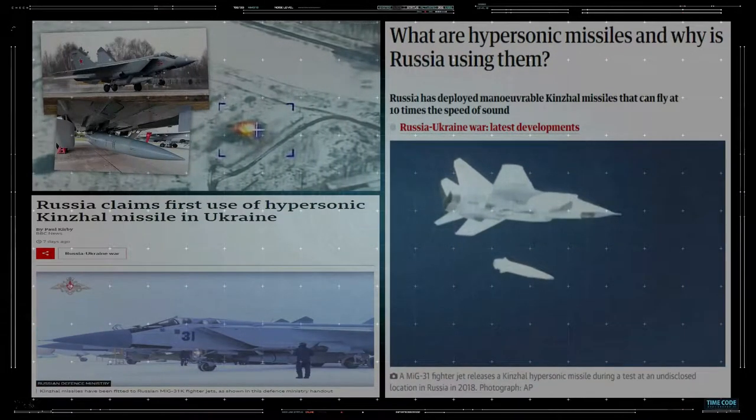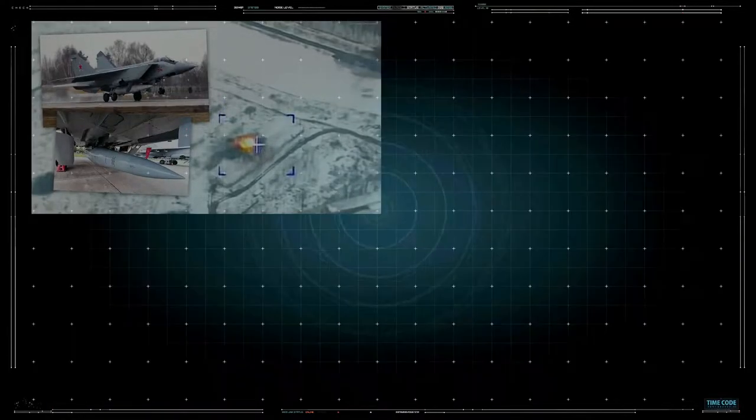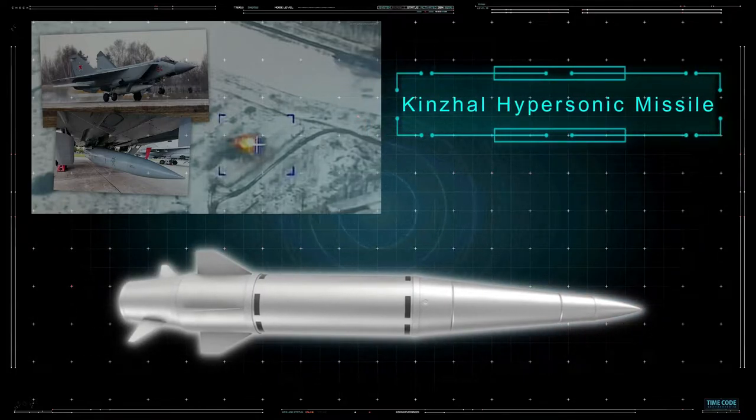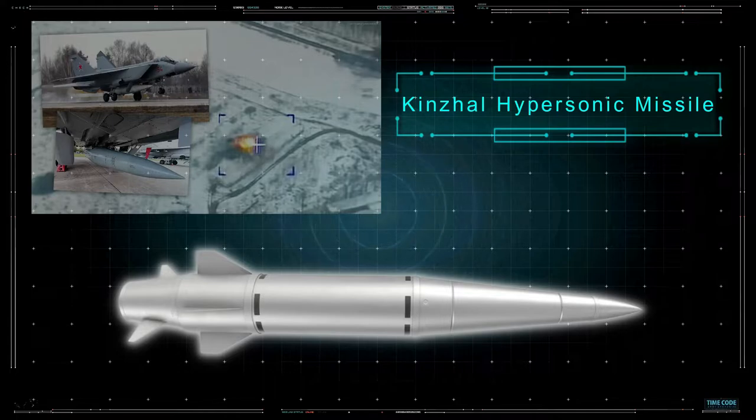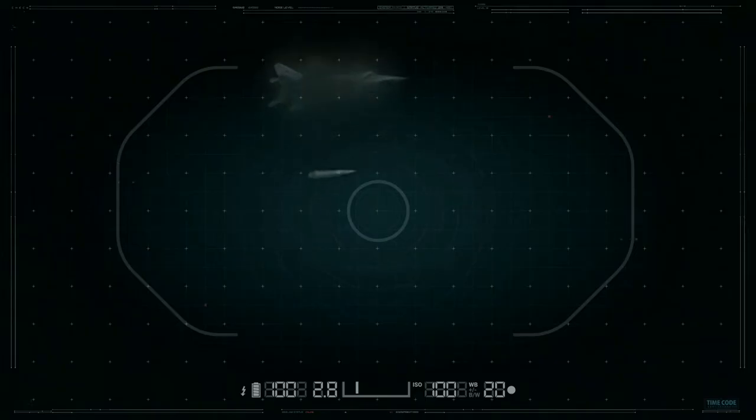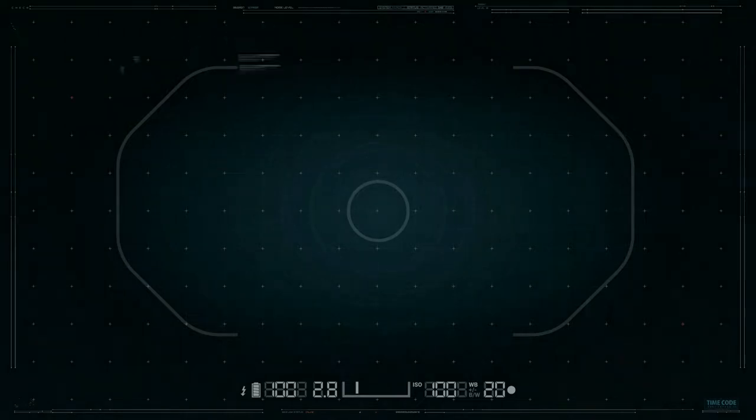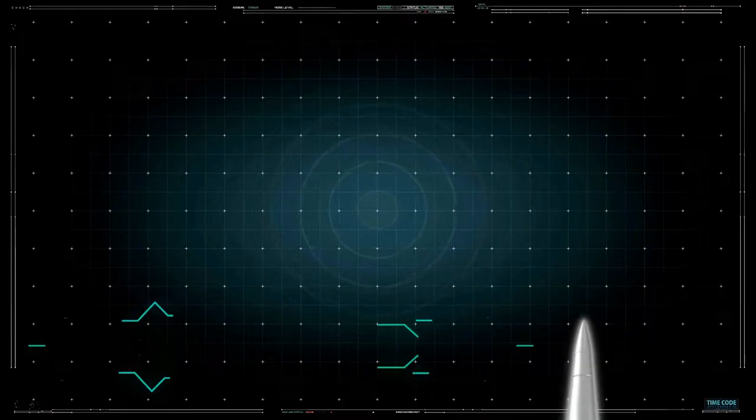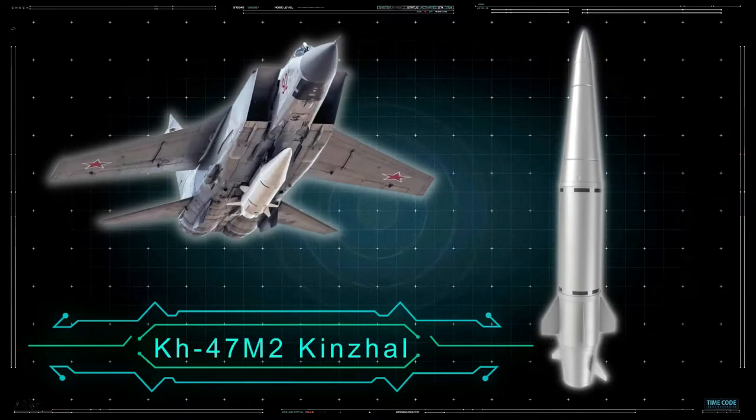For the first time, Russia launches hypersonic missiles against Ukraine. The Kinzhal hypersonic missile destroyed a massive subterranean storehouse carrying missiles and aviation ammo in Ukraine. Russian President Vladimir Putin has named the Kinzhal missile a perfect weapon because it travels at 10 times the speed of sound and can overcome air defense systems. Today, we are going to do an in-depth analysis on KH-47M2 Kinzhal, aka Dagger.